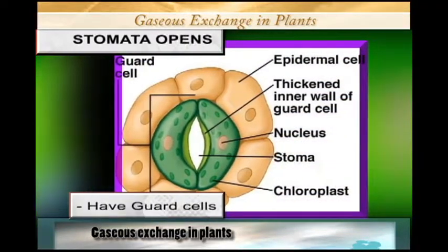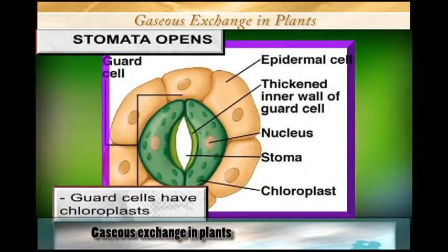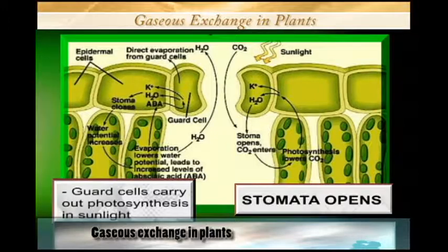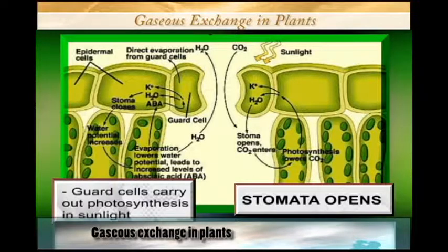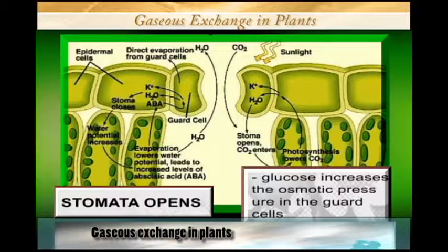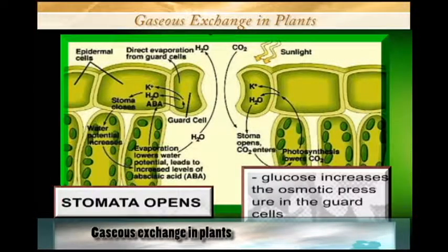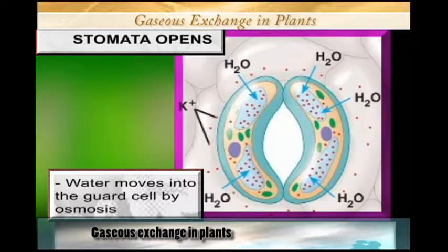You will find that the stomata have what we call the guard cells, and these guard cells have chloroplasts. The guard cells carry out photosynthesis in sunlight, and they manufacture glucose. The manufactured glucose in the guard cell increases the osmotic pressure of the guard cell.